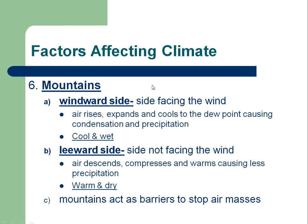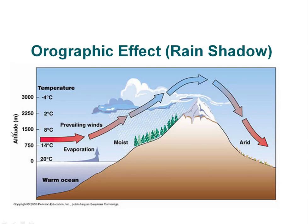Mountains affect climate as well. There are two sides to a mountain: the windward side, facing the wind, and the leeward side, away from the wind. The windward side is wet, the leeward side is dry. Wind comes towards a mountain, it can't go through it, so it's forced to go over it. You've got rising air — the air cools, the water condenses, produces clouds and precipitation. So you get very wet and relatively cooler on that windward side of the mountain.